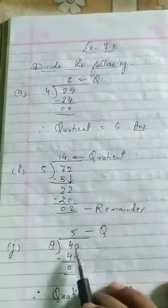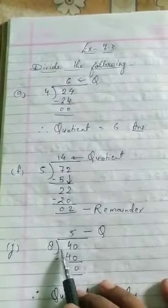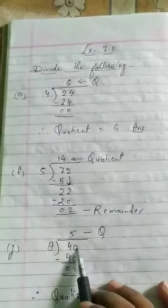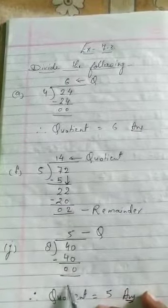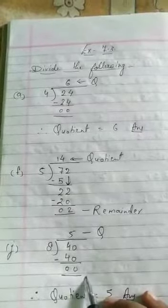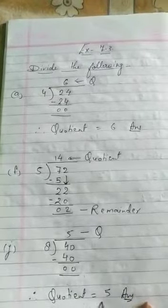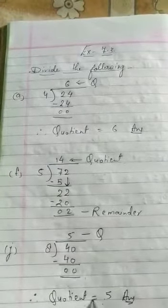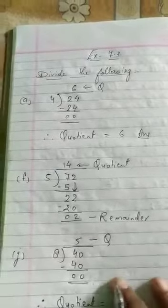Next question, we have to divide 40 by 8. We have to read the table of 8. 8 fives are 40. 40 minus 40 is 0. Quotient will be 5, remainder is equal to 0. Quotient is the answer of division. Quotient is equal to 5.